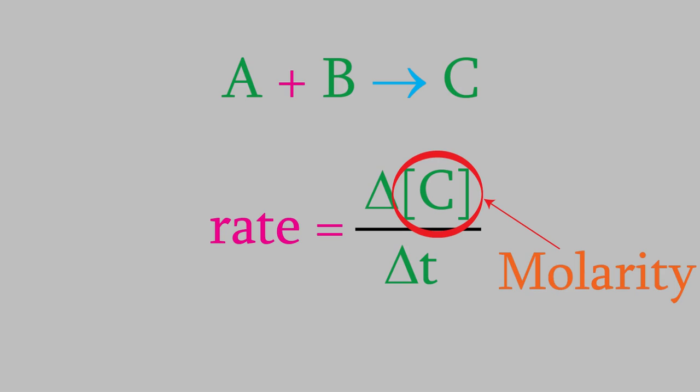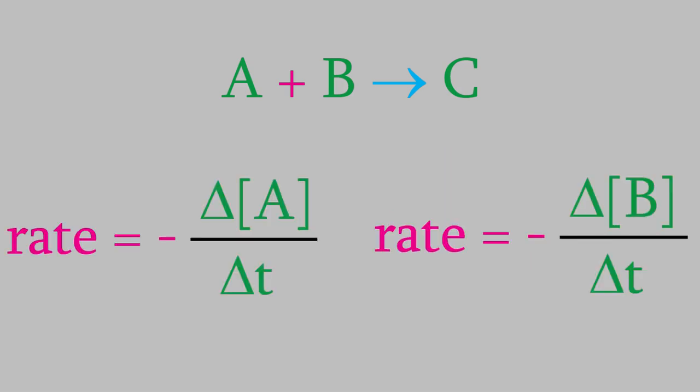But this is just one way of measuring the rate. Suppose C is a difficult compound to detect. In that case, we could measure the rate using one of the reactants instead. If we did that, we'd have one of these two equations. This time, we're using the concentration of A or B. Notice that there's one other important difference. The concentrations of the two reactants decrease, so delta A and delta B are negative numbers. But we still want the rate to be a positive number, so that's why these two fractions have a negative sign in front of them.